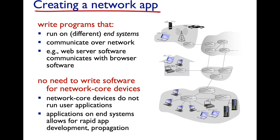How do you create a network application? A network application consists of a set of processes running on various end systems or hosts throughout the Internet, and they exchange messages with one another to implement some application. Web server software communicates with a browser, and together they implement all sorts of applications. All the complexity is kept on the end system and not in the network core — the service provider's infrastructure — so there's no need to write software for network core devices.